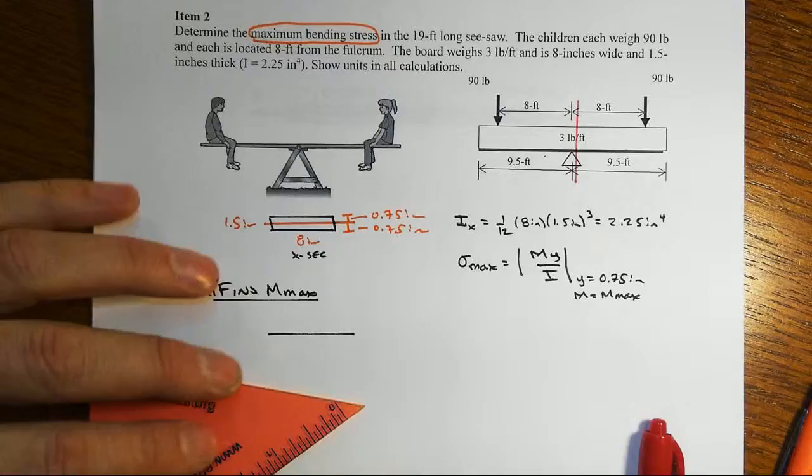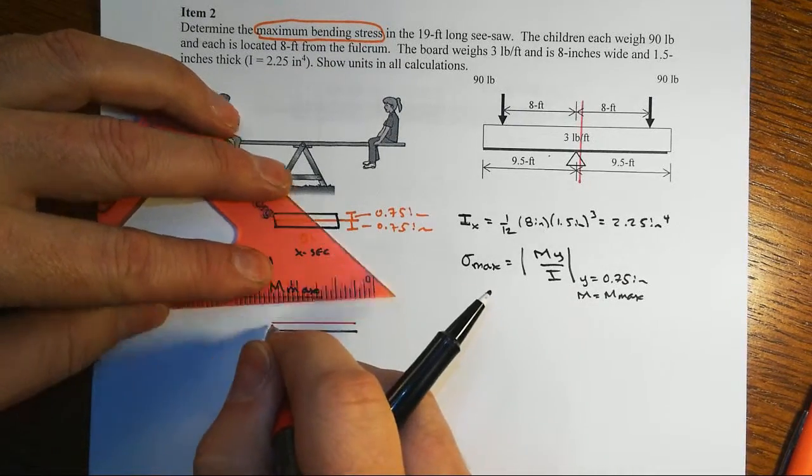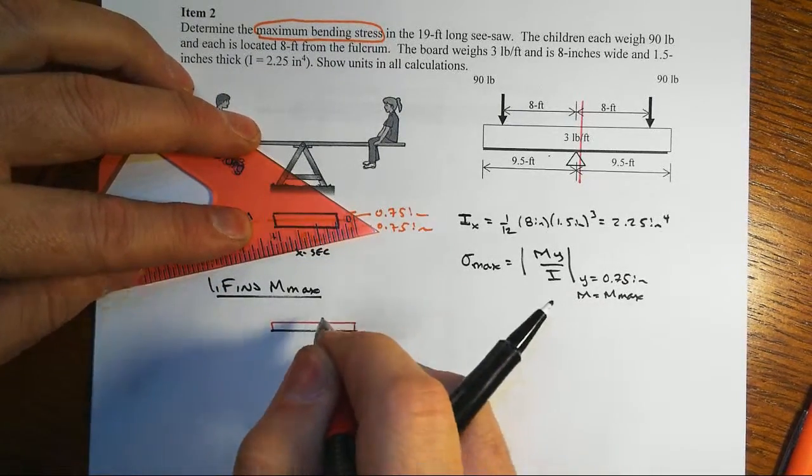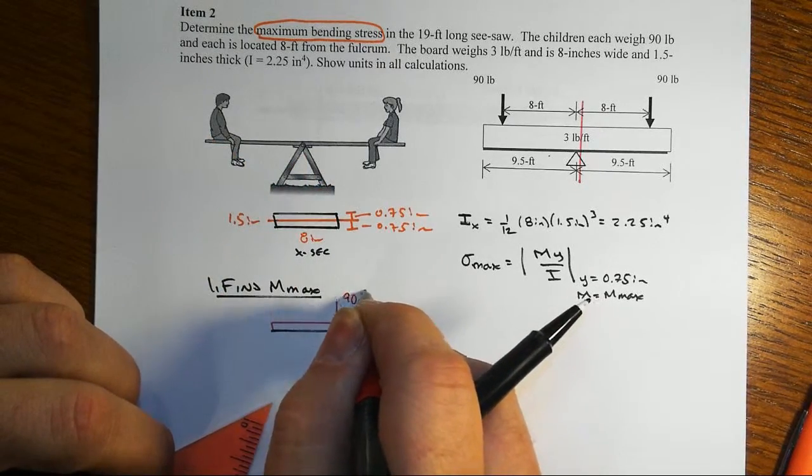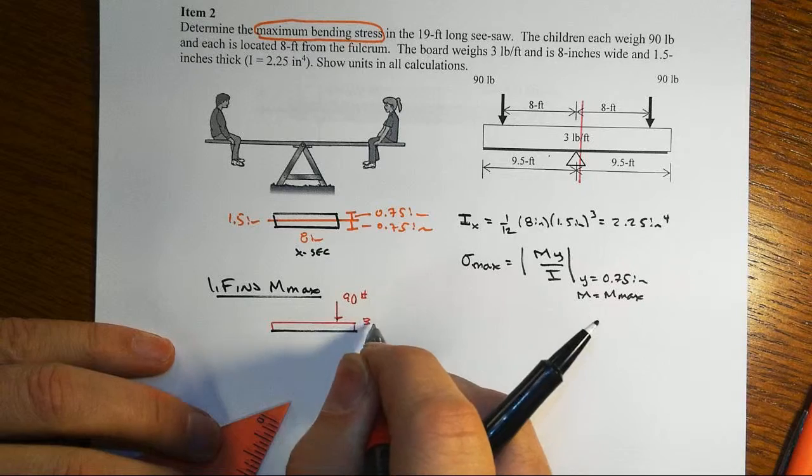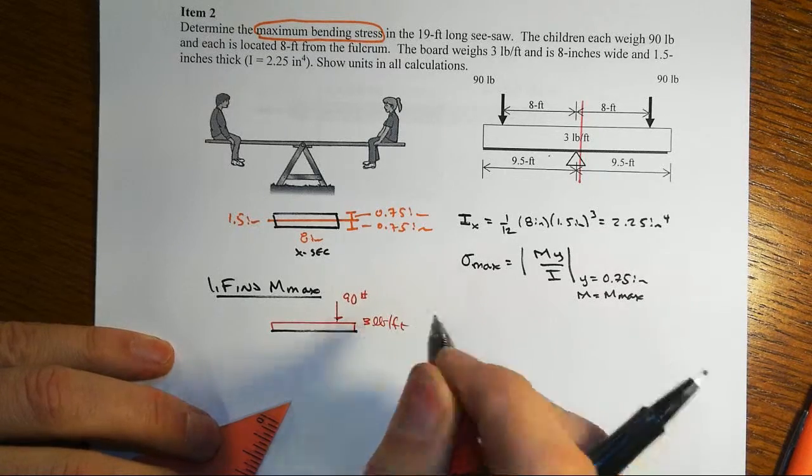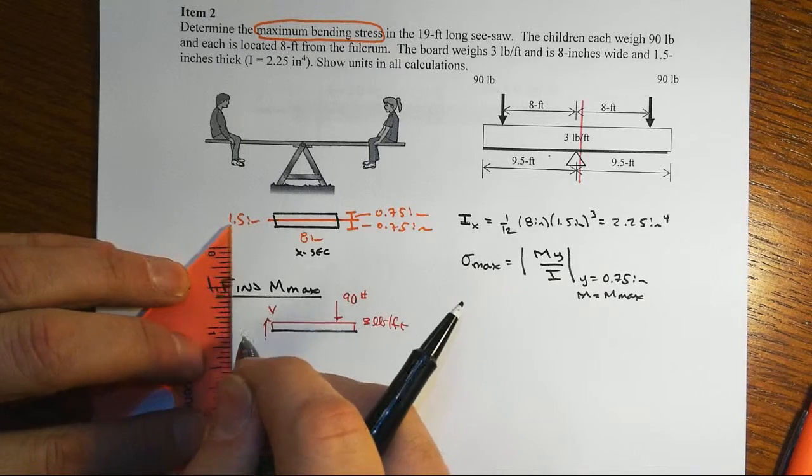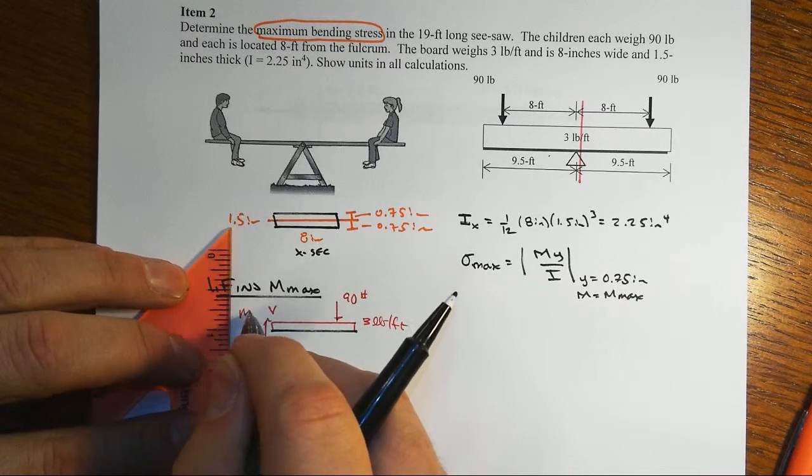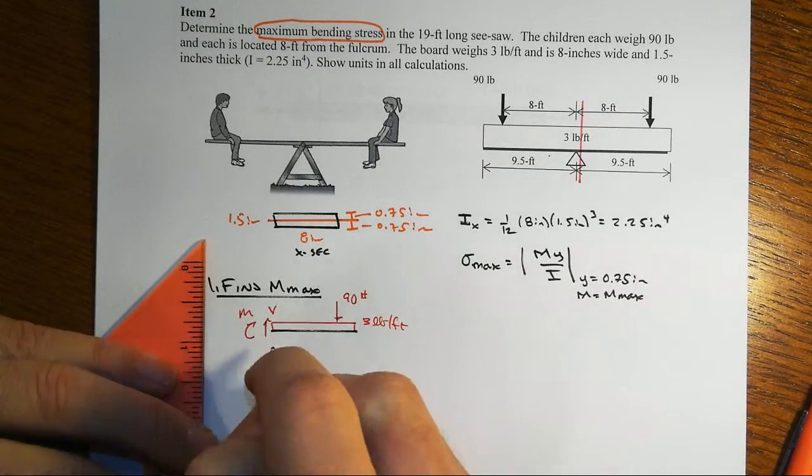There's our beam, there's our distributed load acting downwards, and there's our 90 pounds for the child. And so let's get our shear in there and our bending moment. This is at the fulcrum.